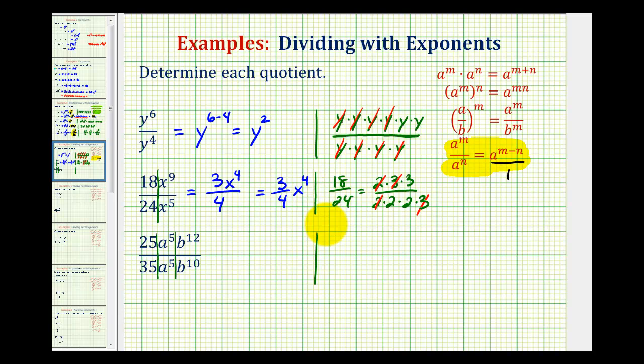So starting with 25 thirty-fifths, these both have a common factor of five. So this simplifies to one, so we're left with five-sevenths.